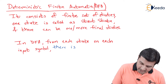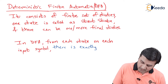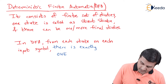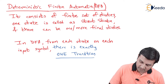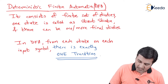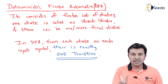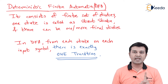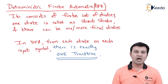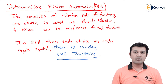The most important line about DFA: from each state on each input symbol, there is exactly one transition. This is a very important thing about DFA — from each state on each input symbol, there will be exactly one transition.